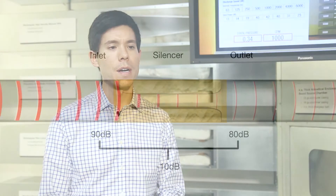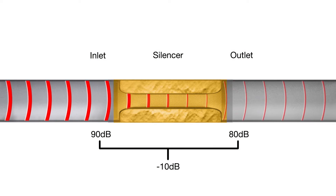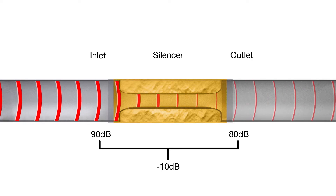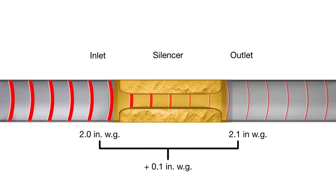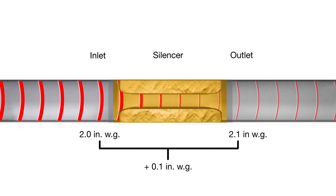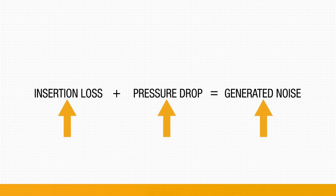Silencer performance is typically described using insertion loss and pressure drop. Insertion loss is the decibel reduction in noise across the silencer and can be thought of as a negative value. The pressure drop is the silencer's differential static pressure and is measured a minimum 5 equivalent diameters upstream and 10 diameters downstream of the silencer. Typically, as the silencer's insertion loss increases, so too does the pressure drop and generated noise.